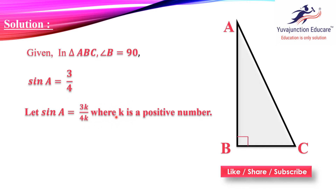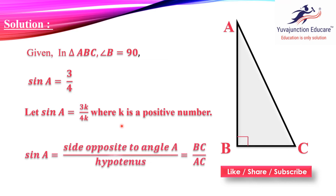As you know, sin A is the opposite side upon hypotenuse — the side opposite to angle A upon hypotenuse. So here, sin A means the side opposite to angle A, which is BC, upon hypotenuse AC. So we get sin A = BC upon AC.